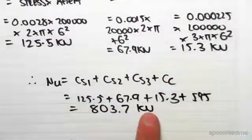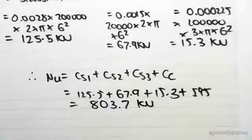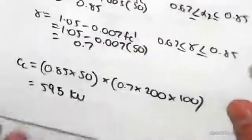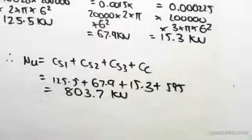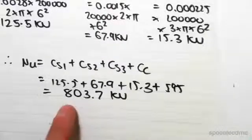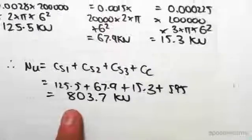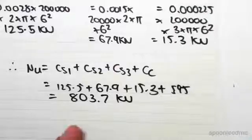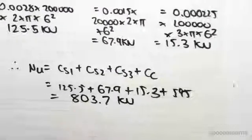So just adding them all up, plus the compression in the concrete, which we found in one of the previous videos was 595. So subbing that in there, we find that the total axial load in our section is 1803.7 kilonewtons.